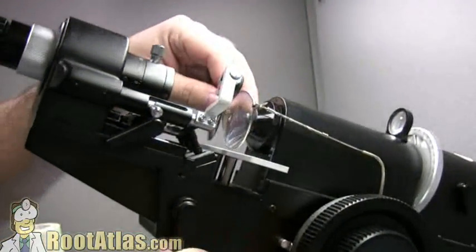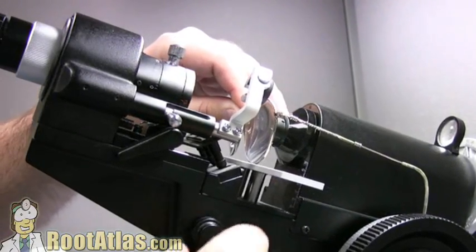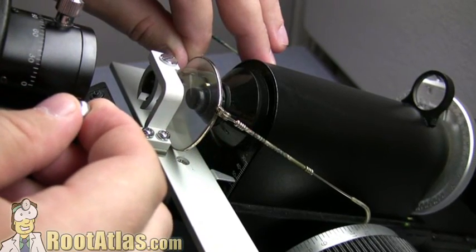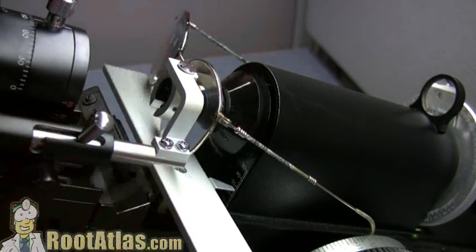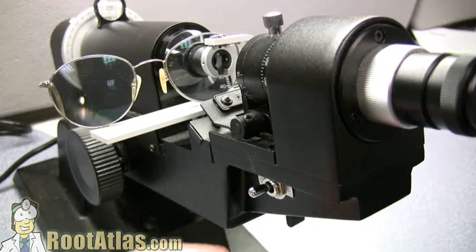The first step is to put the glasses in the frames here. You can see this platform moves up and down, and you want to put the optical center of the lens such that it aligns here. This little brace holds the glasses in place. Make sure both lenses are touching the bottom of this platform.